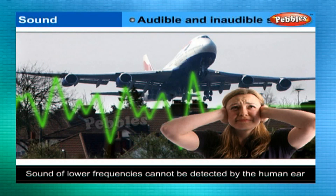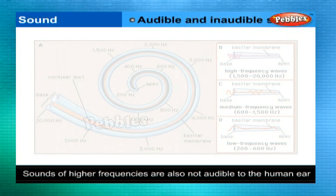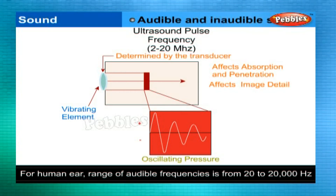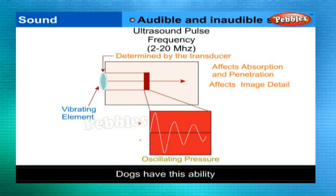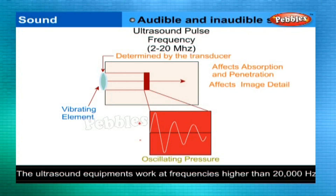Audible and inaudible sounds: sounds of frequencies less than about 20 vibrations per second (20 Hz) cannot be detected by the human ear — such sounds are called inaudible. On the higher side, sounds of frequencies higher than about 20,000 vibrations per second (20 kHz) are also not audible to the human ear. Thus, for the human ear, the range of audible frequencies is roughly from 20 to 20,000 Hz. Some animals, like dogs, can hear sounds above 20,000 Hz. The police use high-frequency whistles which dogs can hear but humans cannot. Ultrasound equipment, used for investigating and tracking many medical problems, works at frequencies higher than 20,000 Hz.